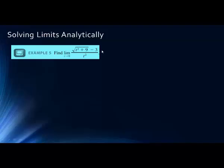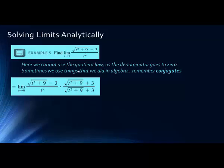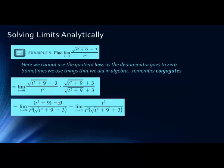If we multiply the top by the conjugate — the square root of (t² + 9) plus 3 — we get the square of the first term minus the square of the second. But we can't just multiply the numerator; we have to multiply both numerator and denominator by the same term, because we're just multiplying by one and anything times one is itself. Remember: a sum times a difference of the same terms gives the square of the first minus the square of the second. So the square of a square root is just the radicand, minus 3² = 9.